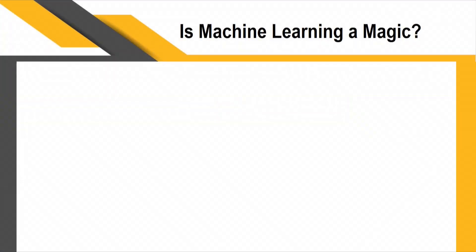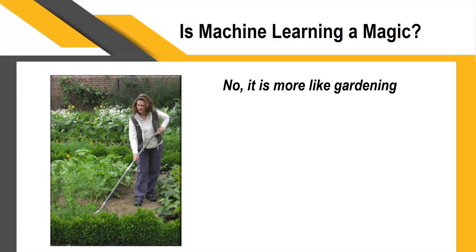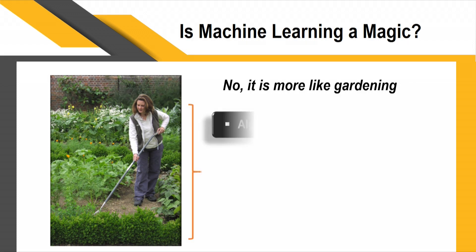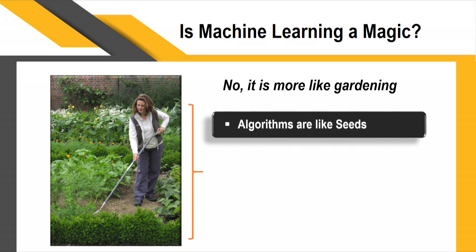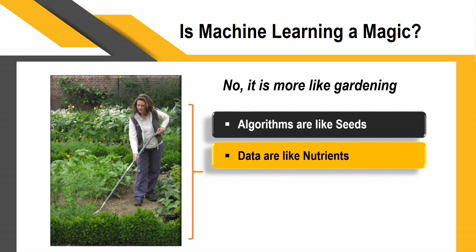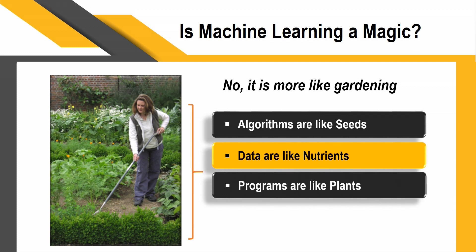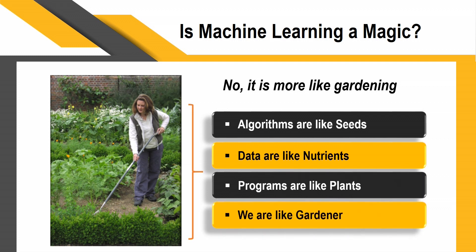Is machine learning really magic? No, it is not magic — it is like gardening. The algorithms are the seeds we sow. The data serves as the nutrients. The programs are like the plants that grow. And we, the practitioners, are the gardeners managing the complete system.